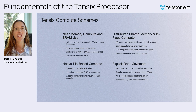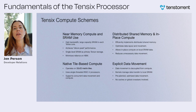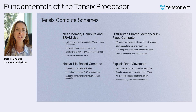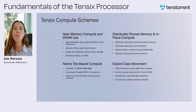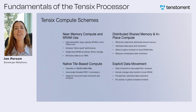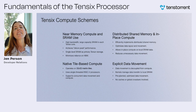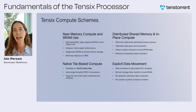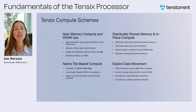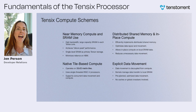Tensix also implements distributed shared memory to optimize data layout and movement. In-place compute on local SRAM means less data shuffling, which cuts down on redundant transfers. The result: more efficient execution, reduced memory overhead, and streamlined compute pipelines that scale effortlessly. Unlike architectures that blur the line between compute and data movement, Tensix keeps them explicitly separate. Kernels manage their own data transfers to SRAM, with movement carefully planned and optimized beforehand. There are no caches, no global crossbars — just clean, deterministic data handling where everything is placed exactly where it needs to be.